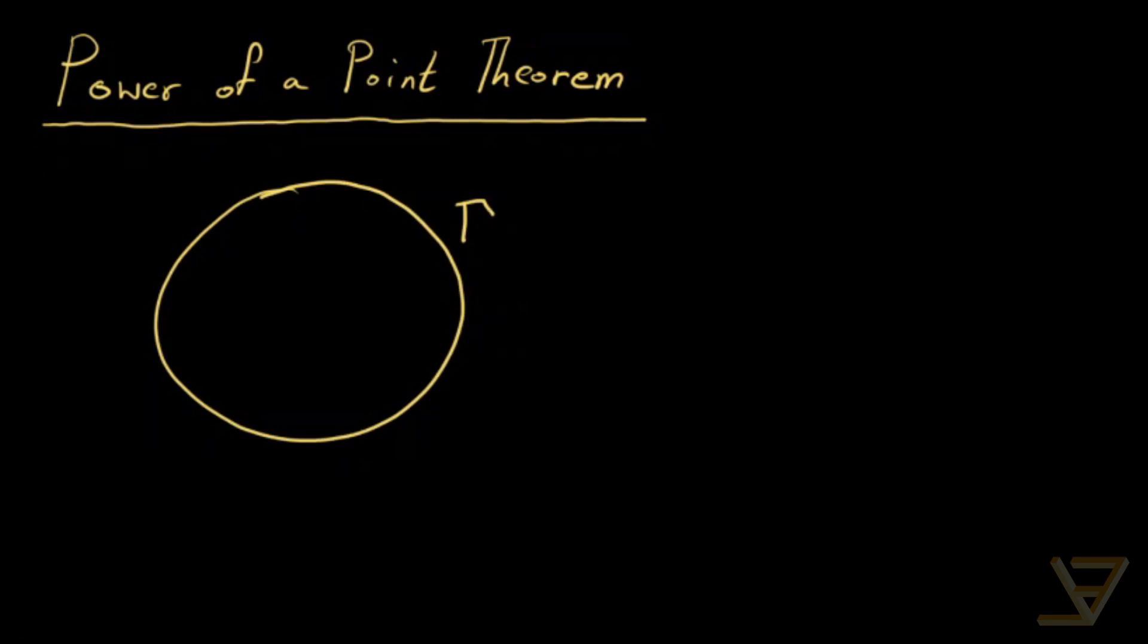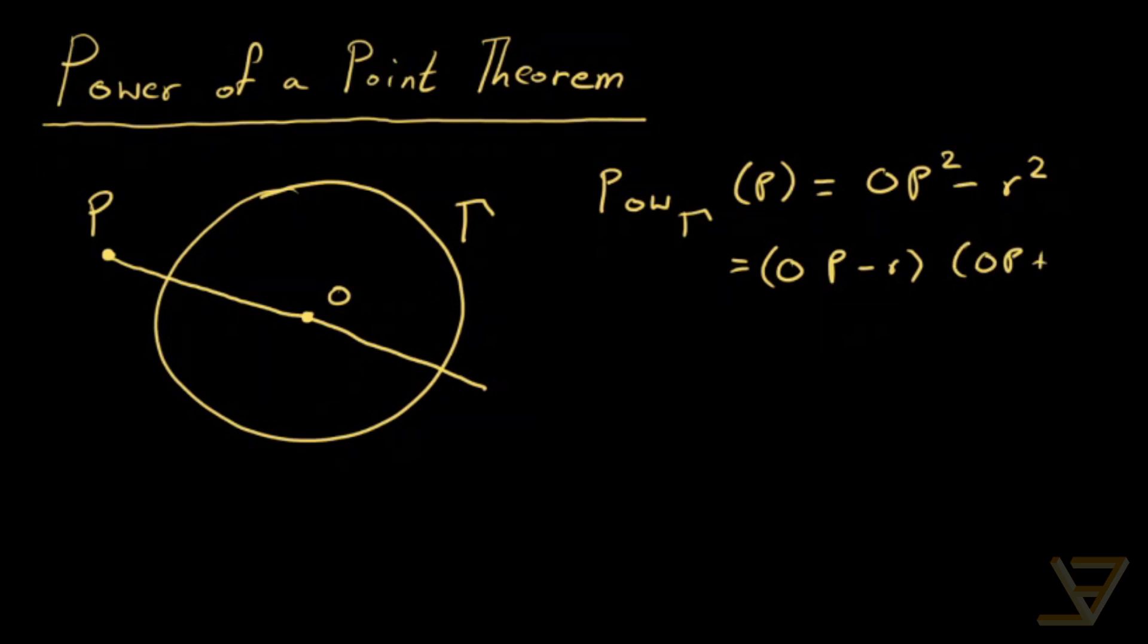And let's say we've got a point P somewhere on the plane. Then what we do is that we take the center of the circle and we draw the line through these two points. So we've got the segment PO. And what we say is that the power of P with respect to gamma is equal to OP squared minus the radius squared, which then is equal to by difference of squares OP minus R times OP plus R.